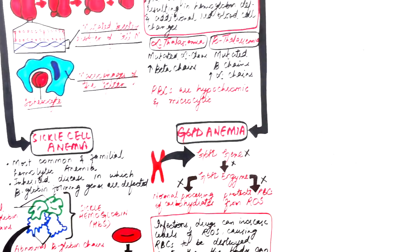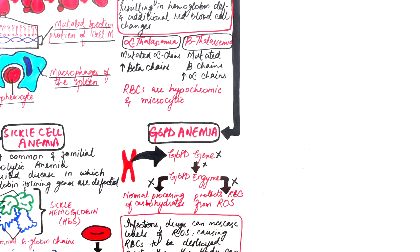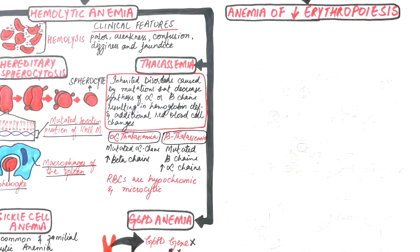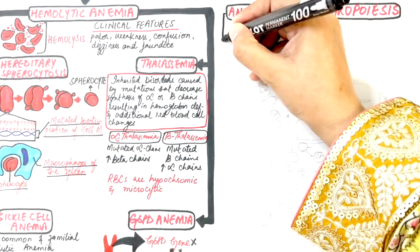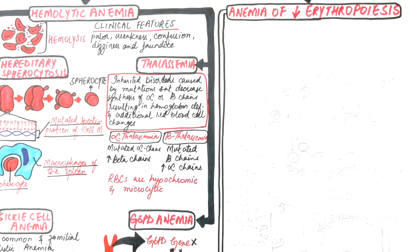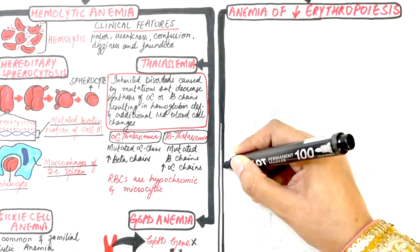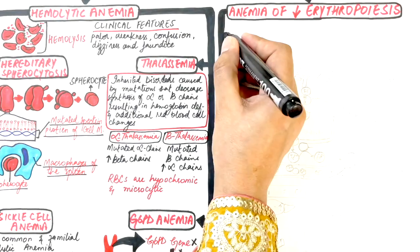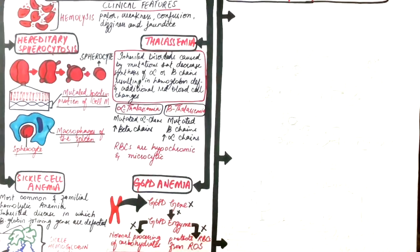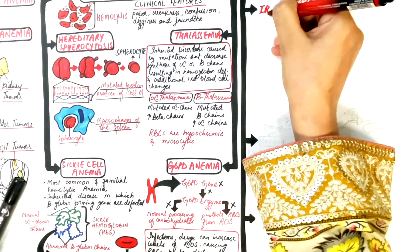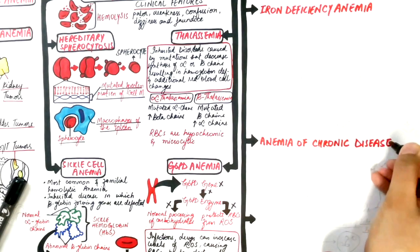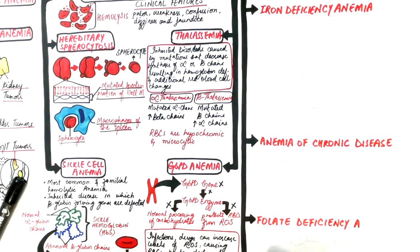Anemia of diminished erythropoiesis is subdivided into four types: iron deficiency anemia, which is the most common type, anemia of chronic disease, folic acid deficiency anemia, and vitamin B12 deficiency anemia.